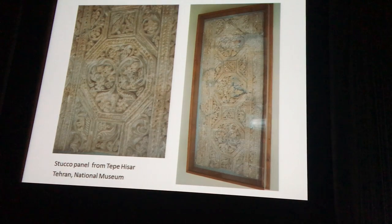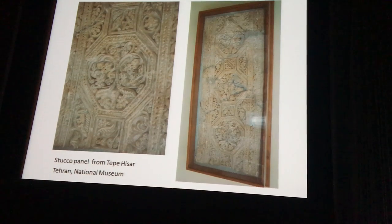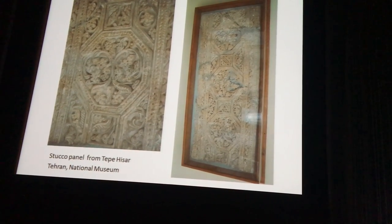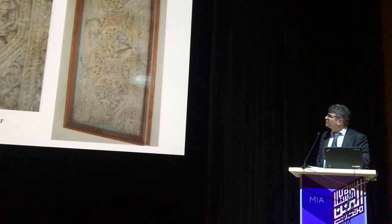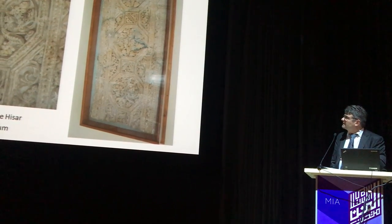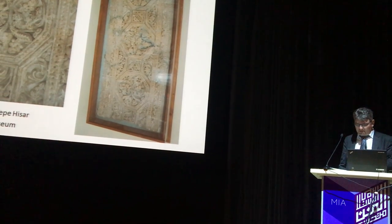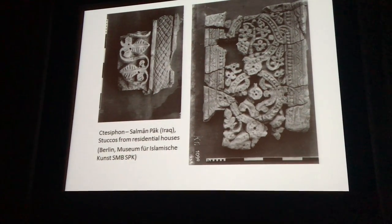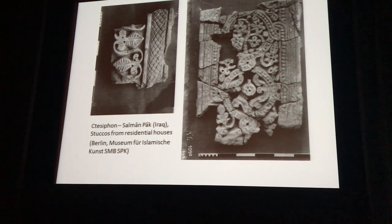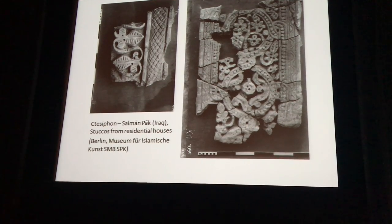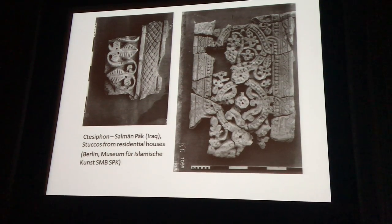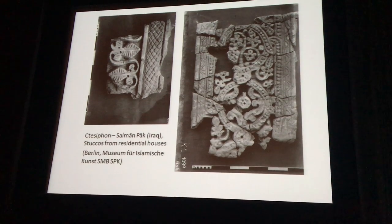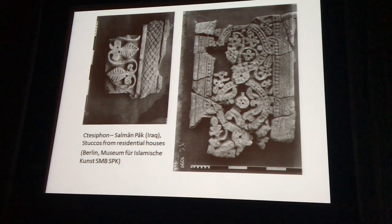For example, here at Tepeh Hissar in northern Iran — from Tepeh Hissar we have this stucco panel that is now in the National Museum in Tehran. Please forgive the reflections on the glass in the photograph, but it is possible to recognize similar arrangements of tendrils and leaves, and also the beads in the accompanying bands, as we have them in the Raqqa and Samara stucco. We find a very similar treatment of forms in the stucco from the region of the Sasanian capital of Ctesiphon, where excavations of the residential area of Salman Park have also rendered stucco fragments that originally belonged to the wall decoration of residential houses, now kept in the Islamic Museum in Berlin.